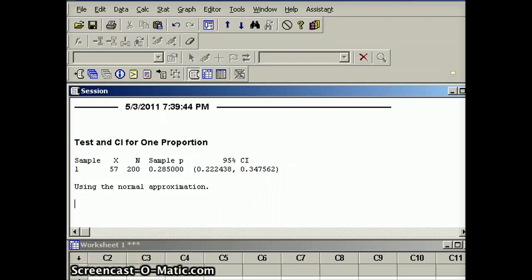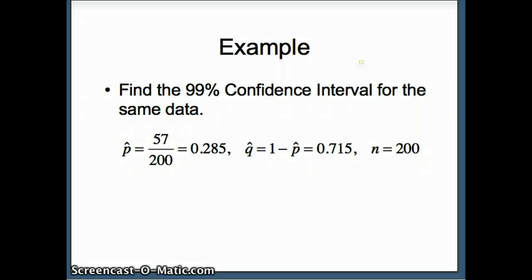Our next question is to find the 99% confidence interval for that same data set. So p-hat, q-hat, and n are all the same. What changed is the confidence level. So if we're doing 99% confidence level, alpha should equal 0.01, and if that's the case we're going to go ahead and find alpha divided by 2, which will be 0.005.